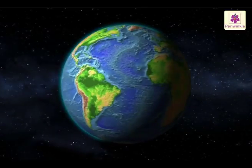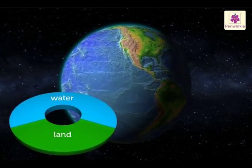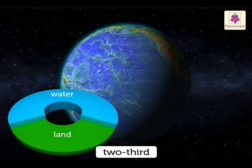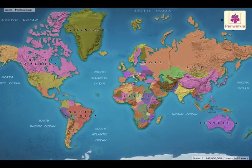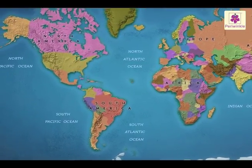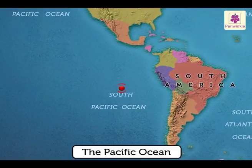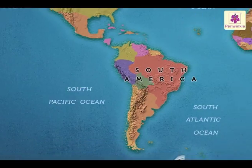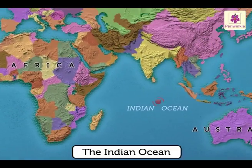Oceans are the great body of water that covers two-thirds of the Earth's surface. The waters of the ocean form one great connected body. It is the continents that divide the waters of the ocean into three major oceans: the Pacific Ocean, the Atlantic Ocean, and the Indian Ocean.